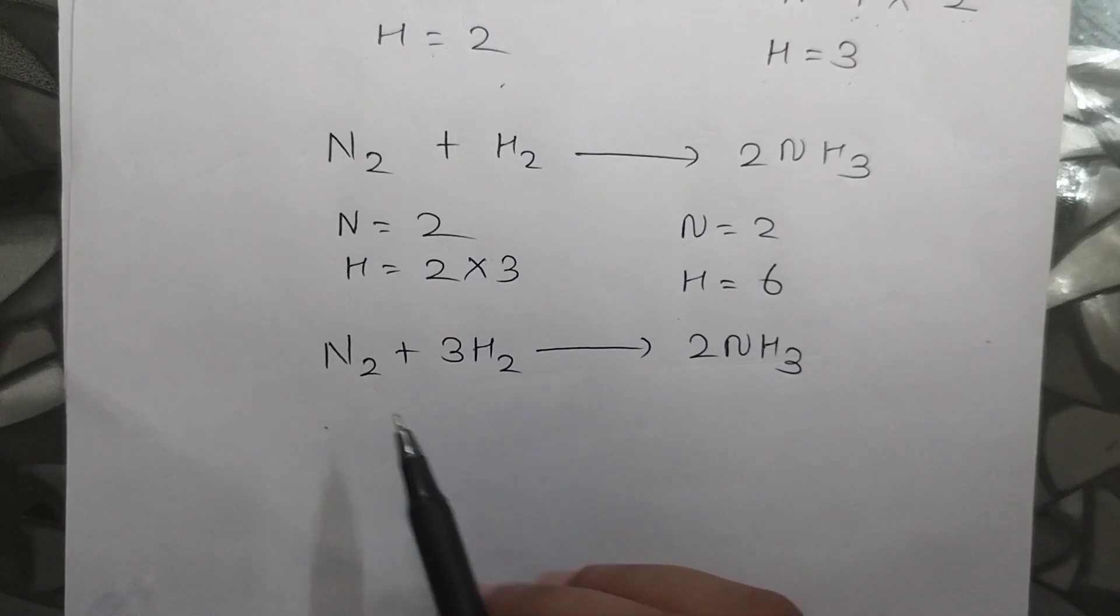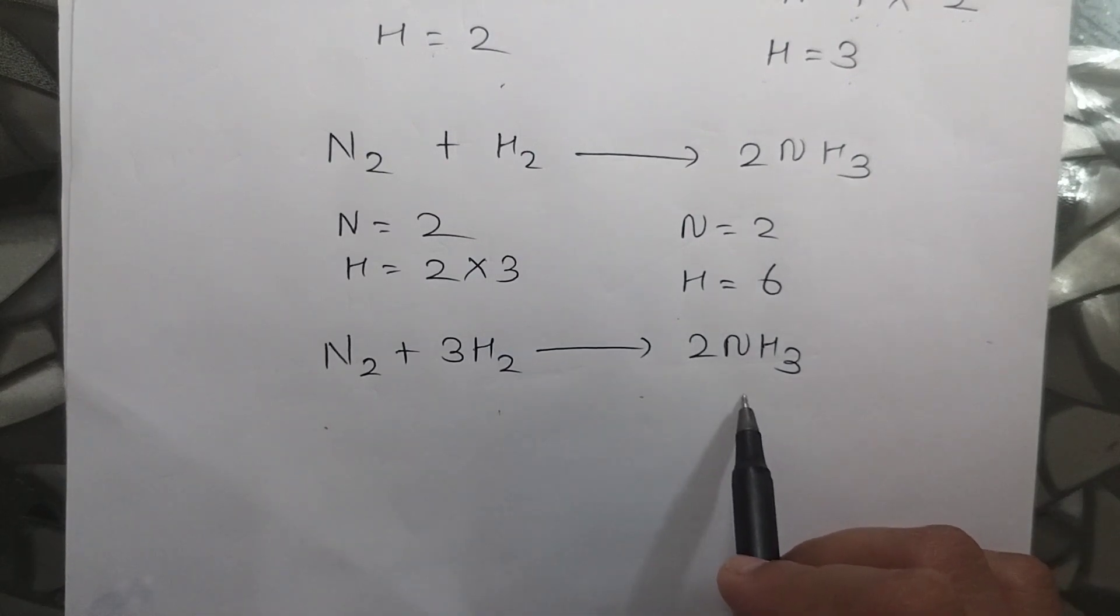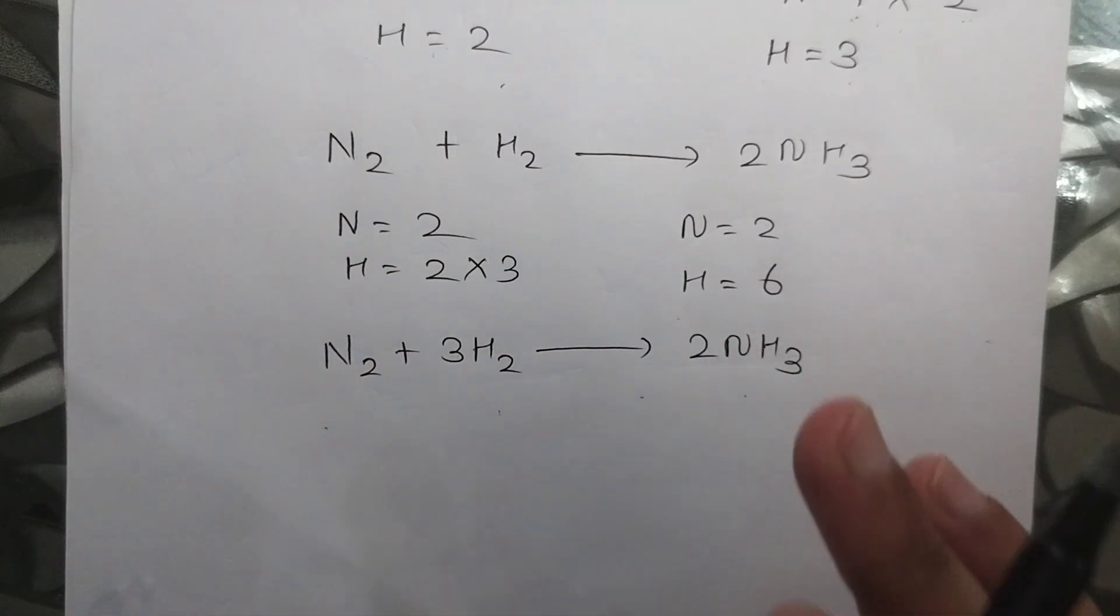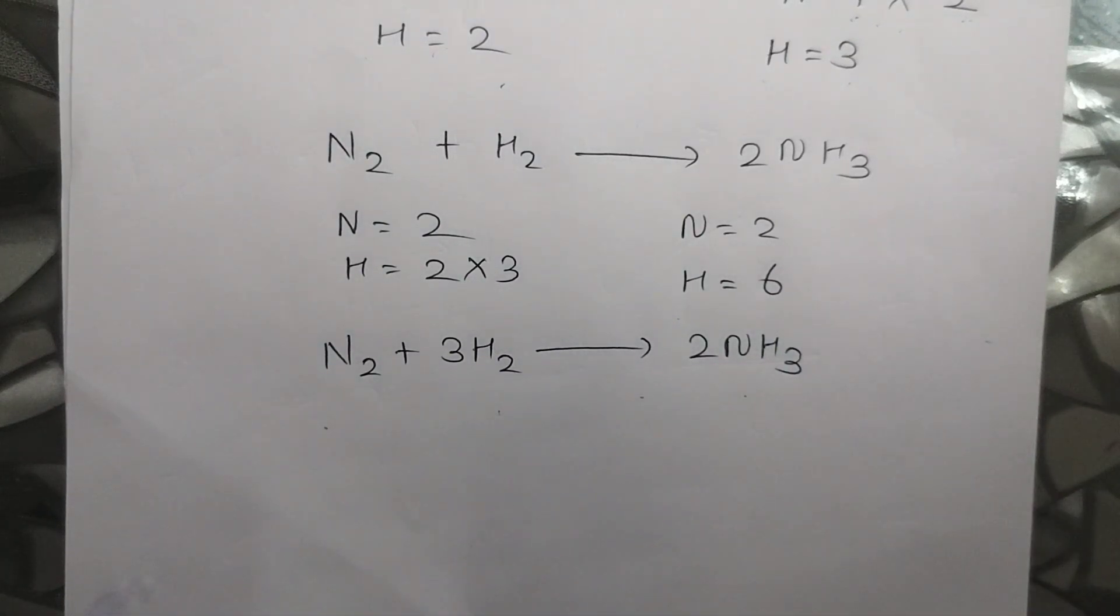So now the equation becomes N2 plus 3H2 to give rise to 2NH3. Now if you check the number of N and H on both the sides it will be same. So this is how we will balance.